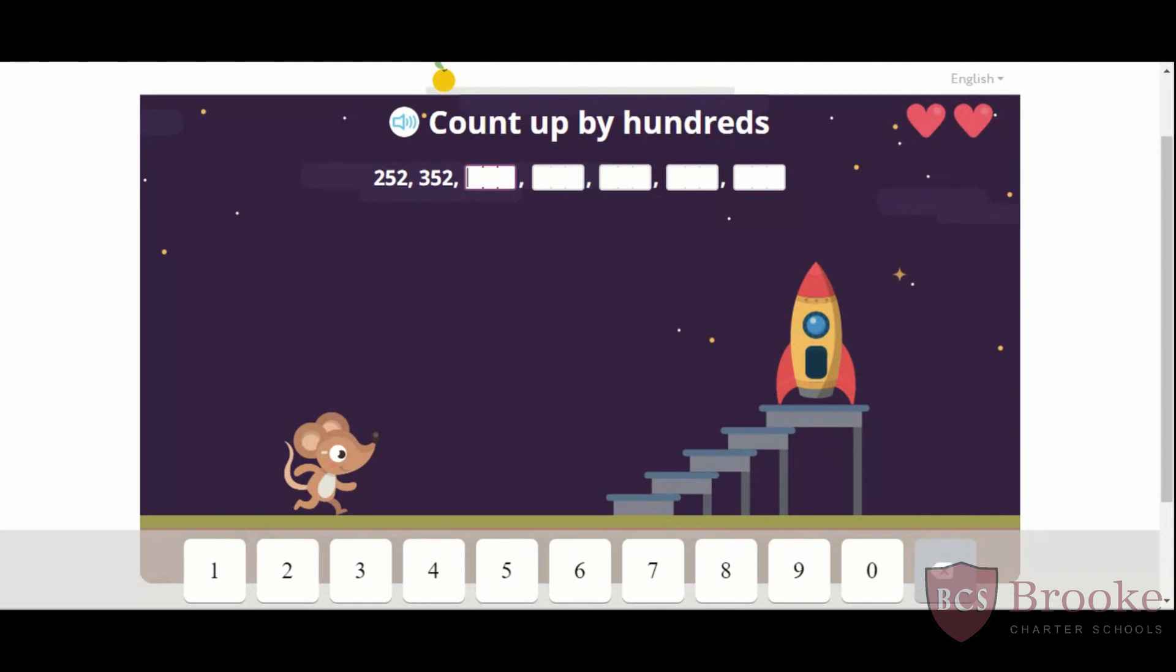Our first number is 252. The next number is 352. If you have a piece of scrap paper handy, try to write down the next five numbers in this counting by hundreds pattern. If not, you can just try to count out loud. Let's count together one more time. 252, 352. What comes next in the pattern?